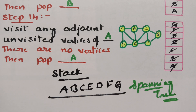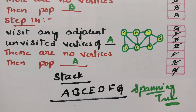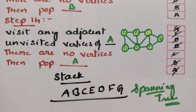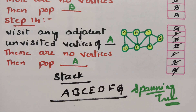Hope you all understand. Each and every step is important — if you write this in an examination, you will get a good score. Whenever you visit any vertex, push it into the stack. Whenever you don't find any route to go deeper into the graph, pop it and take backtracking, then search the top element in the stack and visit the next vertex. Repeat the same process until the stack is empty — this is DFSA. Thank you for watching.